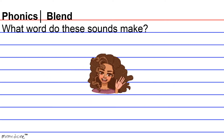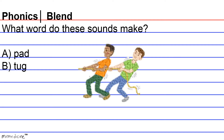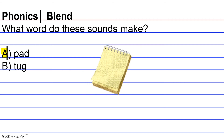What word do these sounds make? P-A-D. I'll give you a moment to think. The word pad is made up of three letters. P corresponds to the puh sound. A corresponds to the uh sound. And D corresponds to the duh sound. When you blend their sounds together, you get the word pad. The correct answer choice is answer choice A, pad.